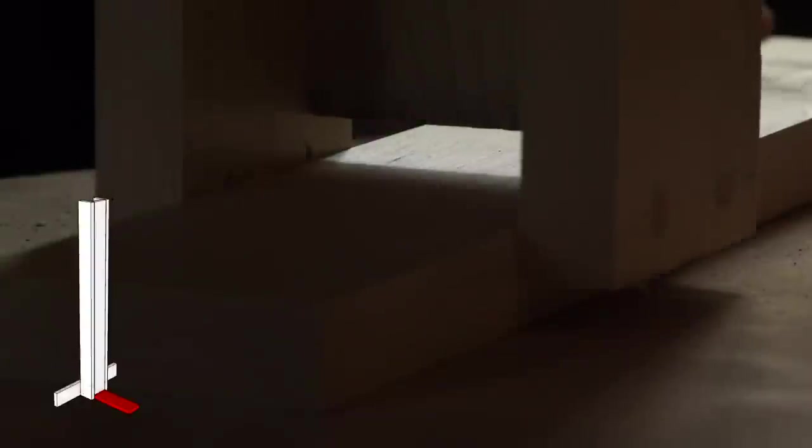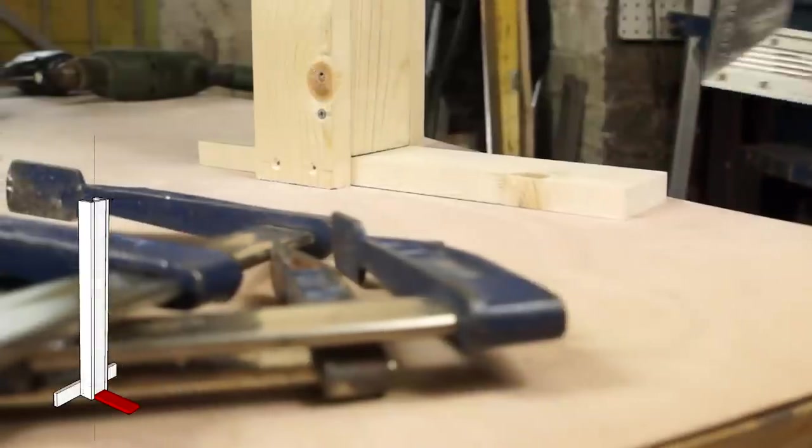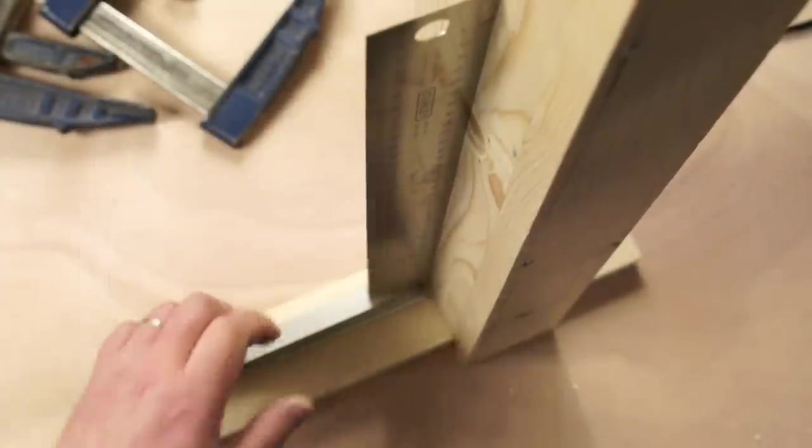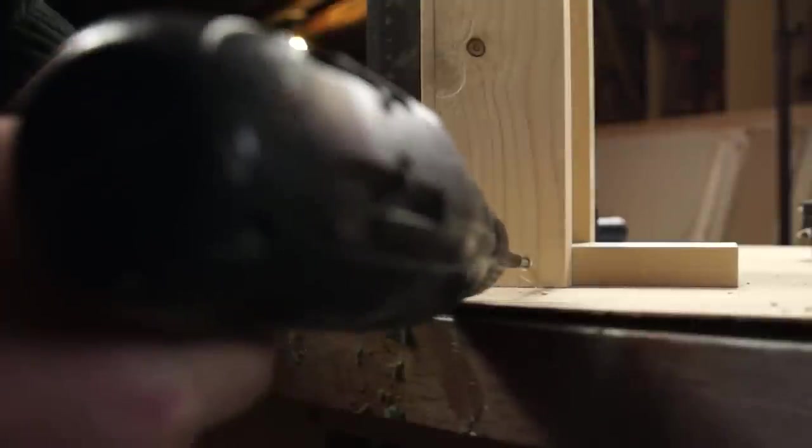Once both sides have been secured I can slip the column onto its base, another short piece of 3B1. Using a square I can bring it to 90 degrees and then fix it with some more chipboard screws.